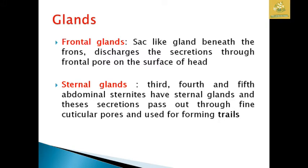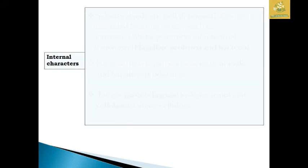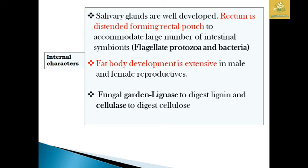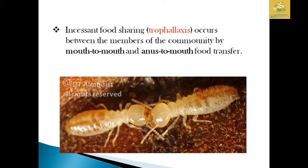The sternal gland secretion acts as a pheromone for intercommunication of insects. Regarding internal characteristics, the salivary gland is well developed. The rectum is dilated to form a rectal pouch to accumulate a large number of intestinal symbionts — flagellate protozoa as well as bacteria. Fat body development is extensive in male and female reproductives. Fungal gardens are used to digest lignin as well as cellulose. In case of food sharing, they transfer food from mouth to mouth or anus to mouth, and this process is called trophallaxis.